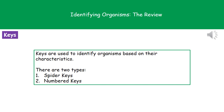Welcome to our review on identifying organisms. The first thing we need to think about is how we're going to do this. You've got a bunch of organisms in front of you and you need to know what they actually are. The way we do this in biology is by using something called a key.